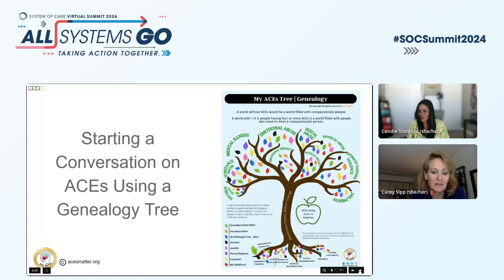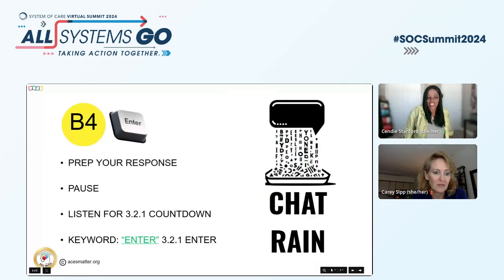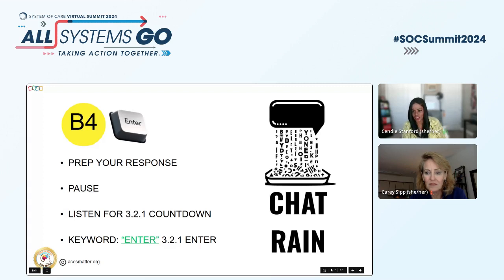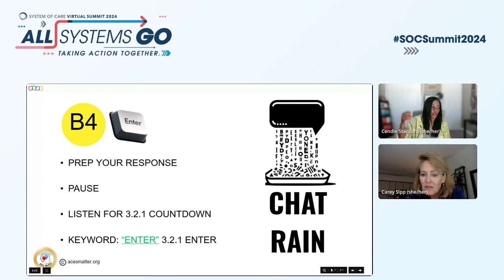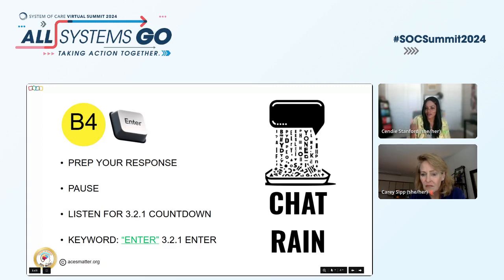So I learned this from Intac during orientation — something called the chat rain. How the chat rain works: if you're a participant in the background, what we want to do is control how many chats come in at one time instead of having isolated individual responses. I'm going to ask a couple of questions. I'll ask you to prep your response — first think about it, then type it, and then wait for me to go three, two, one. The magic word is enter. When you hear me say 'enter,' everybody should be hitting enter on their keyboard.